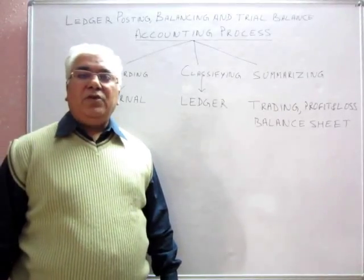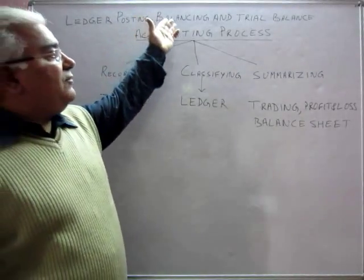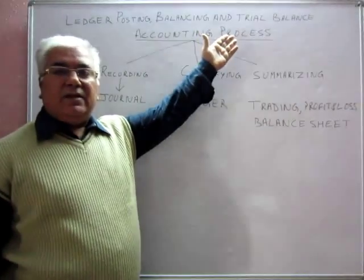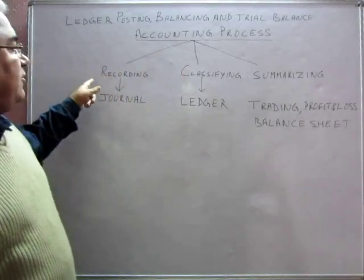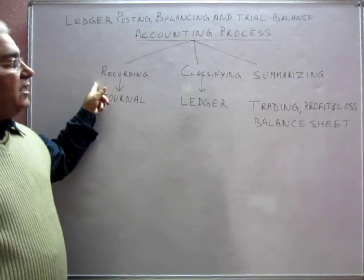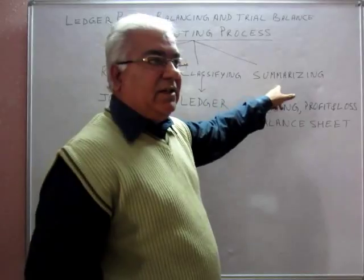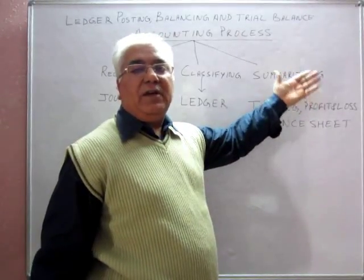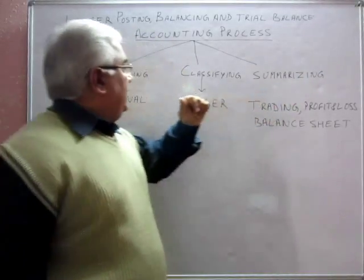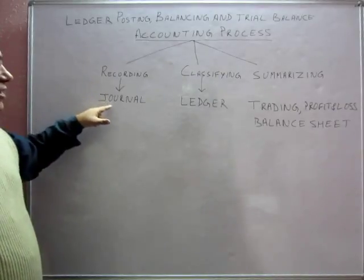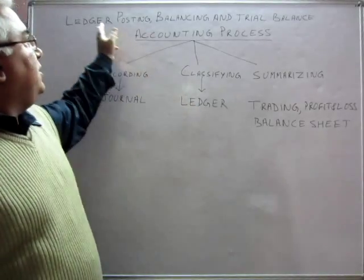In this lecture I'm going to explain how to do ledger posting, then balancing of accounts, and then preparation of trial balance. The process of accounting is: first we record all financial transactions, then those transactions are classified, and then summarized. This recording of transactions is done in the journal and classification is done in the ledger.